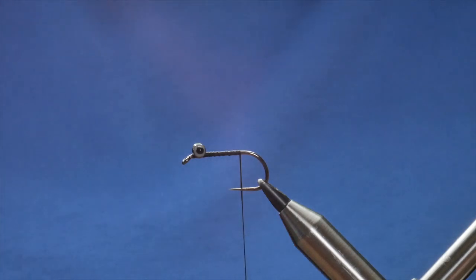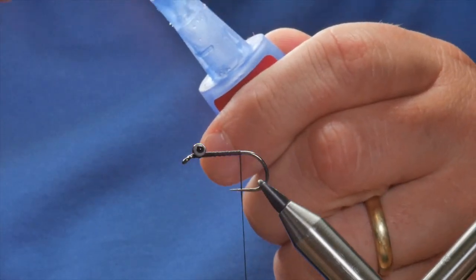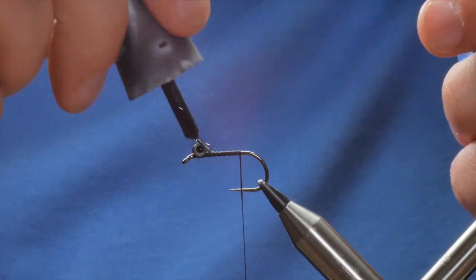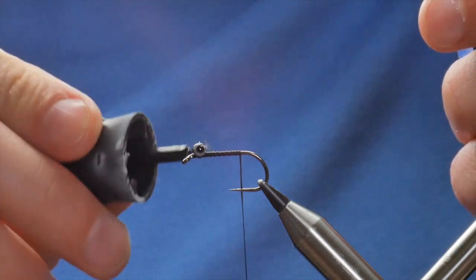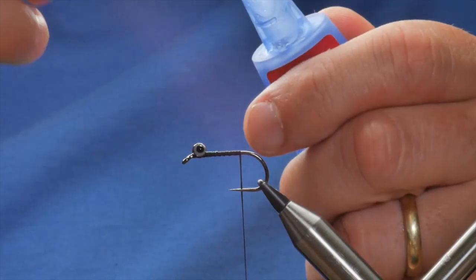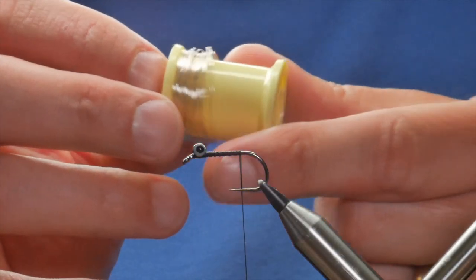Now what I tend to do with these is come over the top with some super glue, just to lock that into place. Make sure I cover the eyes. In the normal scheme of things I would have cast off my thread before I did any of this, took it out the vise, put it to the side to dry. Right now the super glue is all dry.